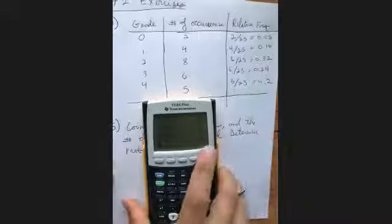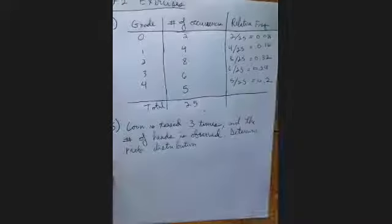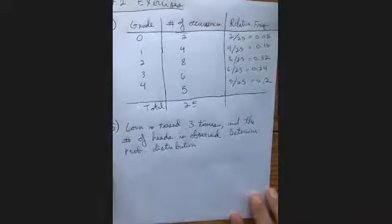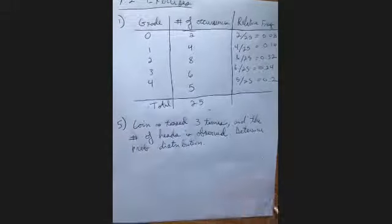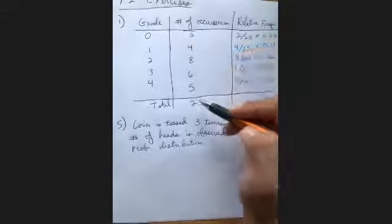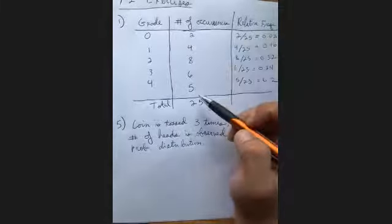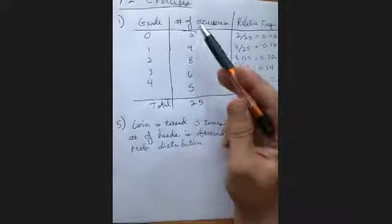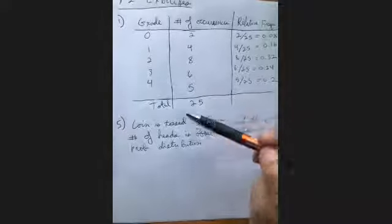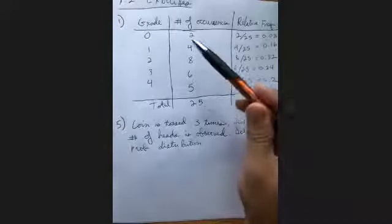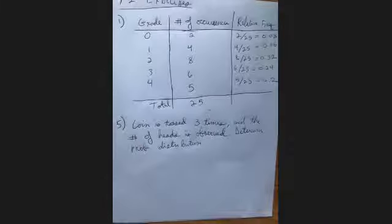That's all it boils down to: to calculate relative frequencies, simply tally the total frequency and divide each individual frequency by that total.